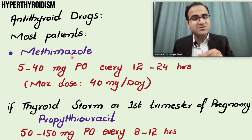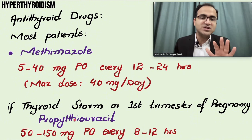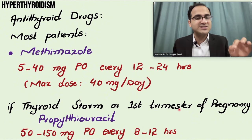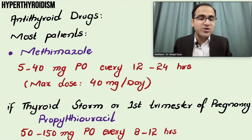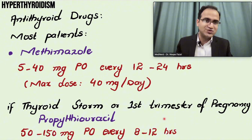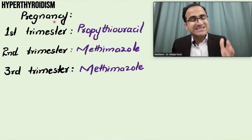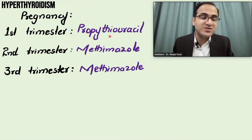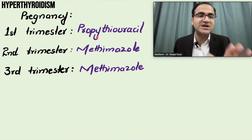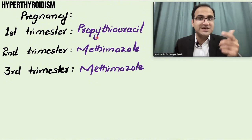To summarize these high-yield points: the starting drug is usually methimazole, but propylthiouracil is used in thyroid storm and in the first trimester of pregnancy. Propylthiouracil is given at 50 to 150 mg orally every 8 to 12 hours. So if a patient presents with first-trimester pregnancy and hyperthyroidism, you use propylthiouracil and not methimazole, as methimazole is teratogenic and causes aplasia cutis as well as choanal atresia.